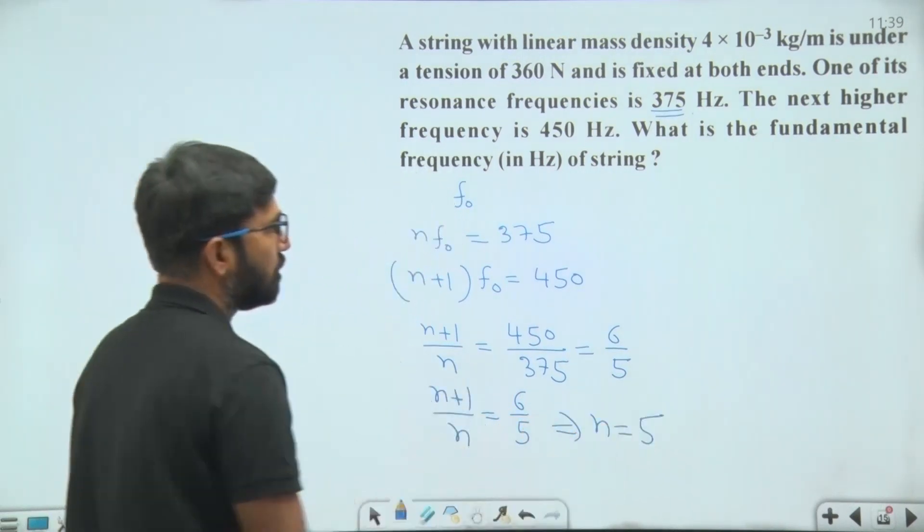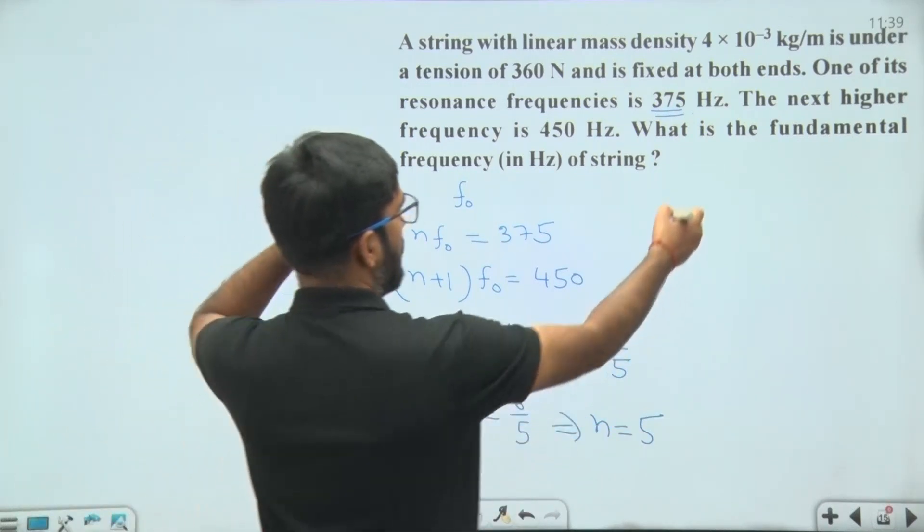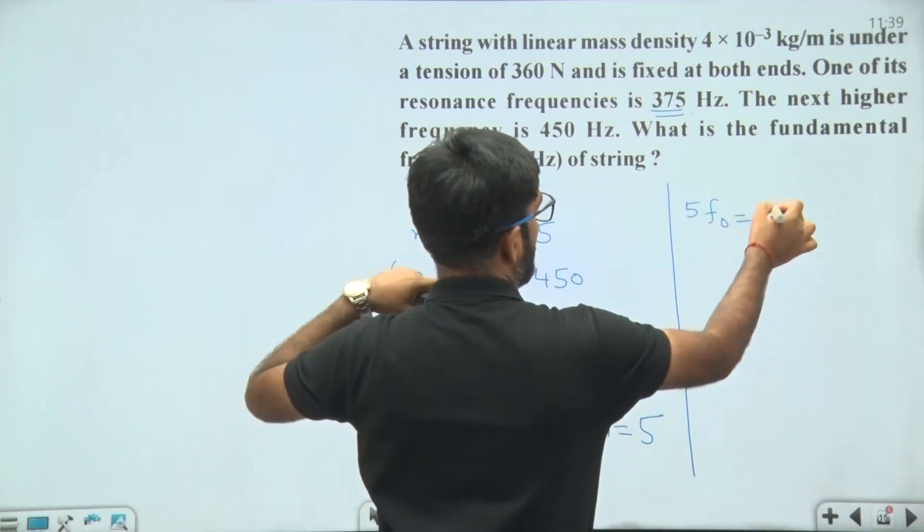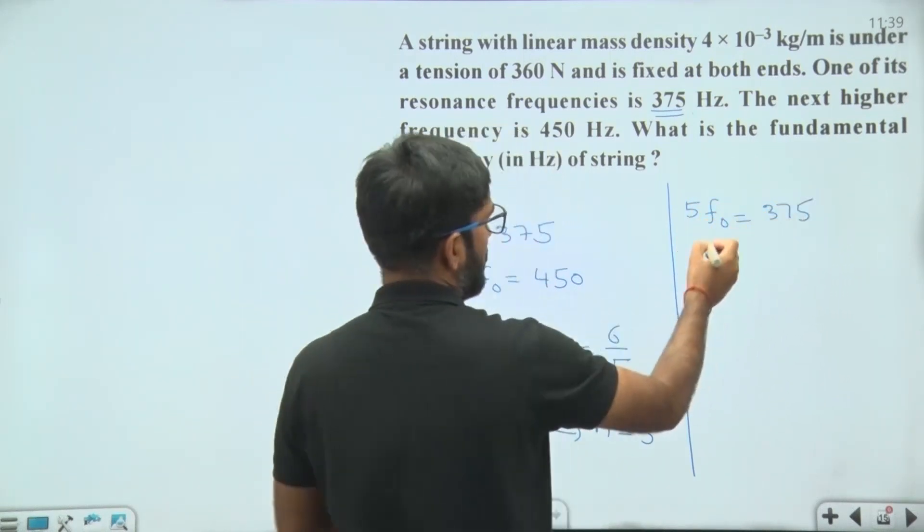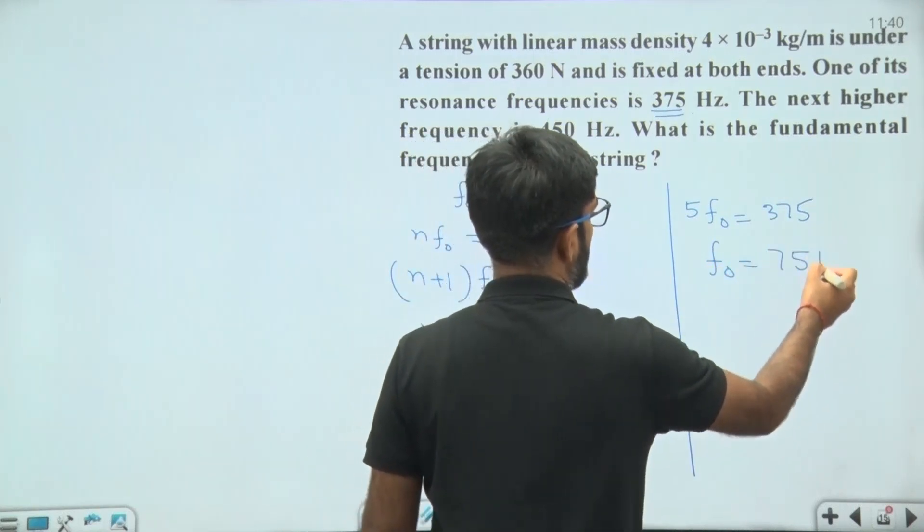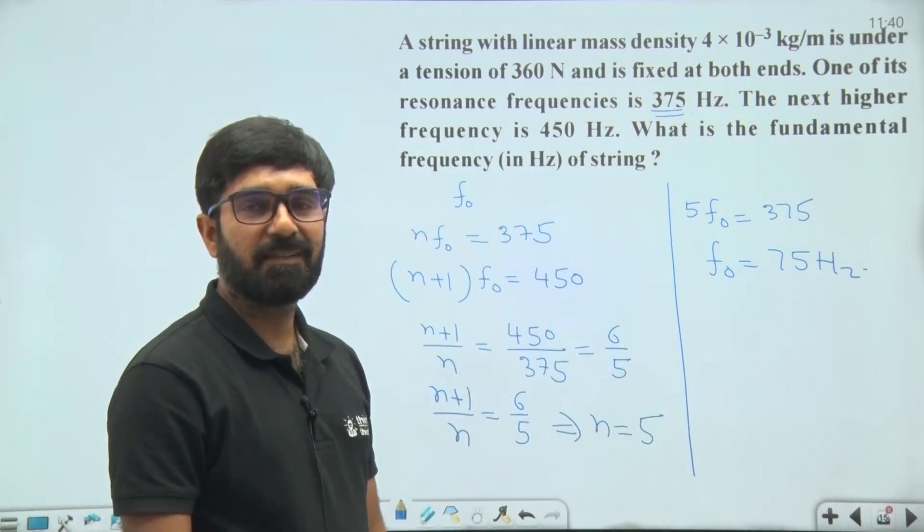Putting n = 5 into the first equation: 5 × f0 = 375, so f0 = 75 Hz. Hence, the fundamental frequency is 75 Hz.